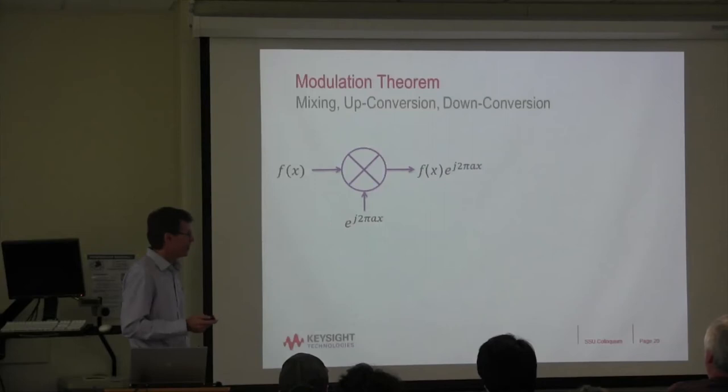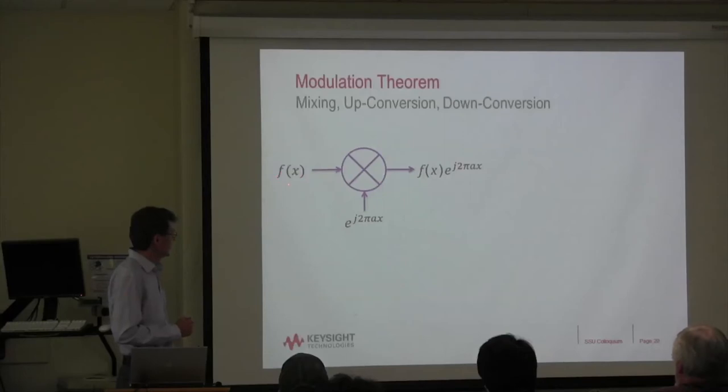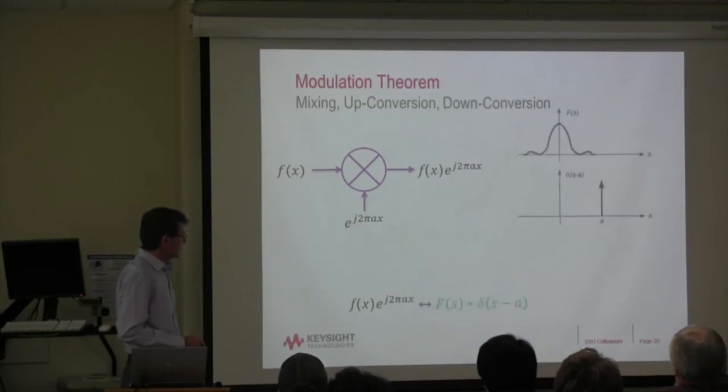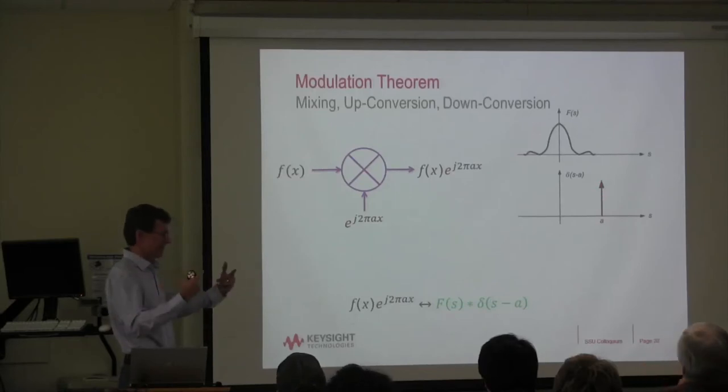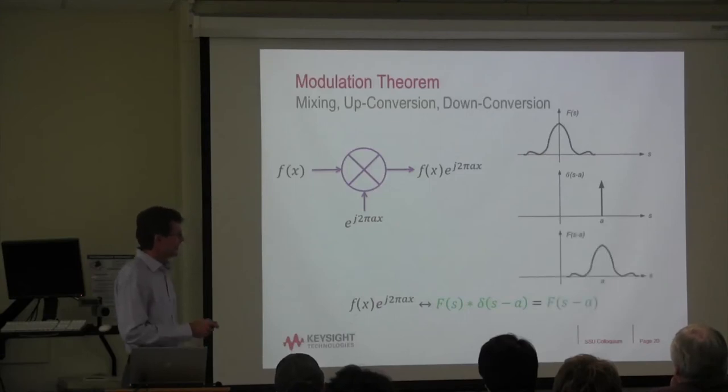Finally is modulation, which is another term for mixing or up conversion or down conversion. And all we're doing is taking our function of interest and multiplying by a complex sinusoid, which in this case, multiplication in the time domain is convolution in the frequency domain. So let's take, here's our Fourier transform of our f of x. And here's our complex sinusoid, which is an impulse function in the frequency domain. So again, just slide the impulse function through that f of x, and you get the function you're interested in transmitting frequency. So that's up-conversion.